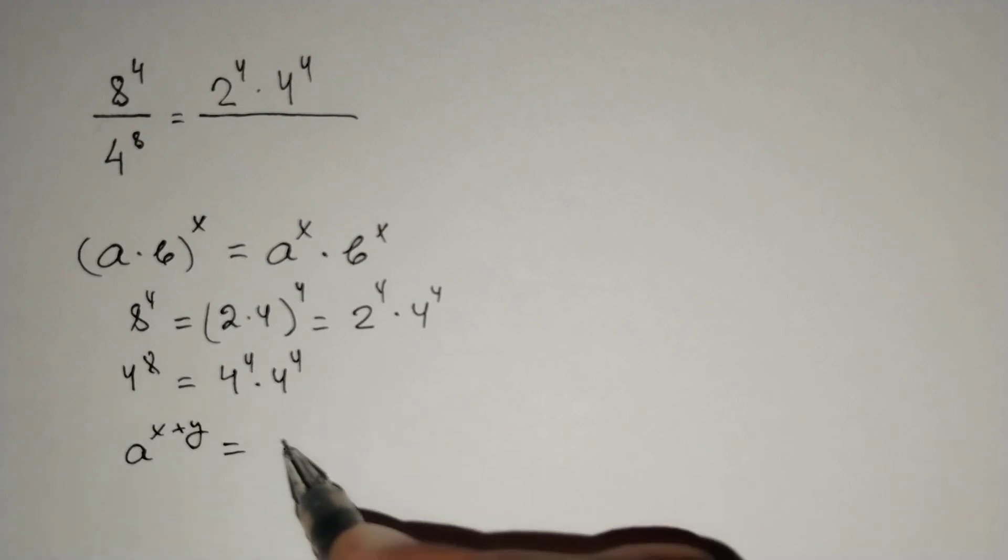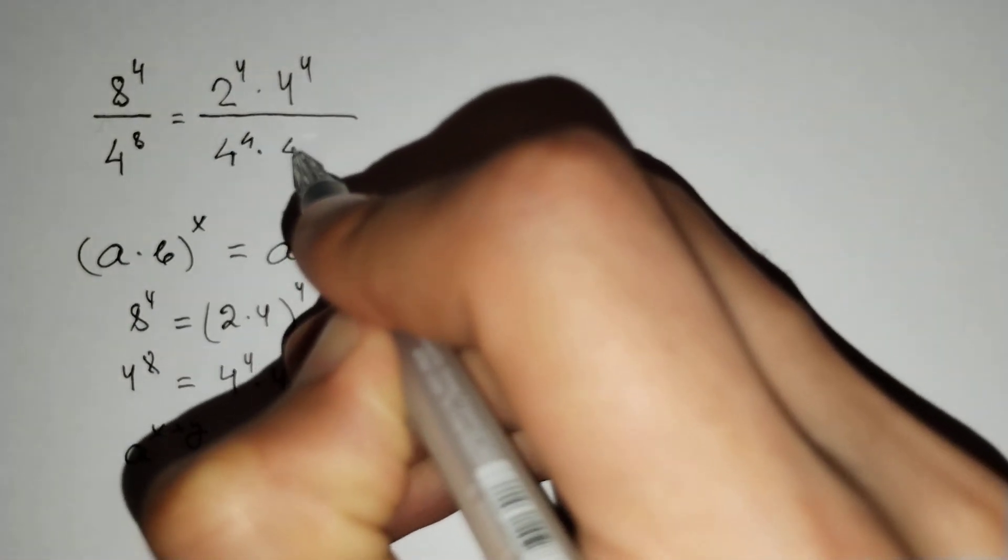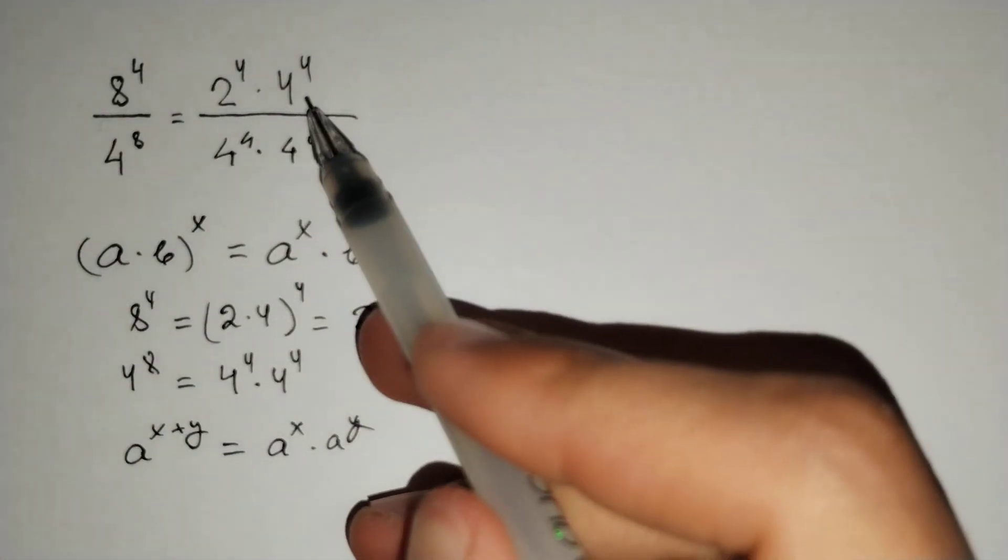For this formula, this is equal to 4^4 · 4^4. Now let's put it here: 4^4 · 4^4. And 4^4 are the same at the numerator and denominator, and we may cancel it.